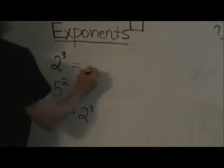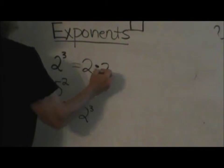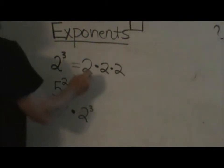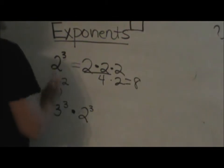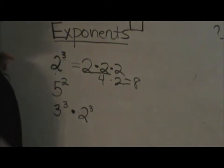What that means is 2 to the third is 2 times 2 times 2, or 2 taken 3 times. So 2 times 2 is 4 and 4 times 2 is 8. So 2 cubed or 2 to the third power is actually 8 and not 6.